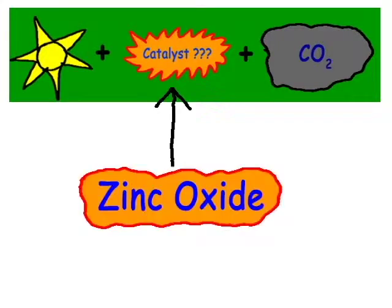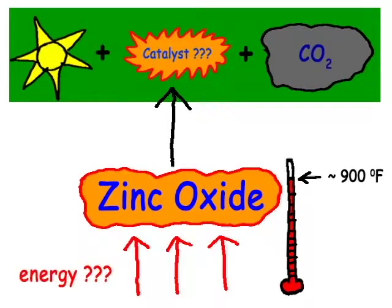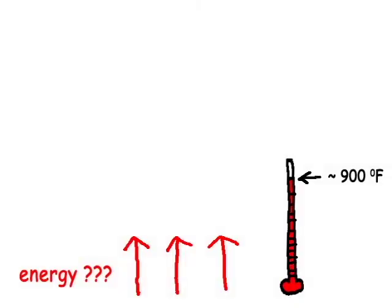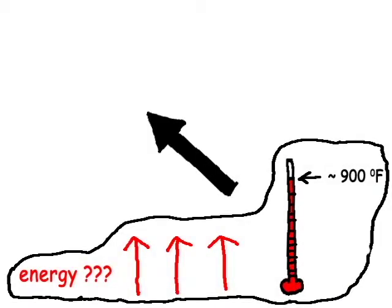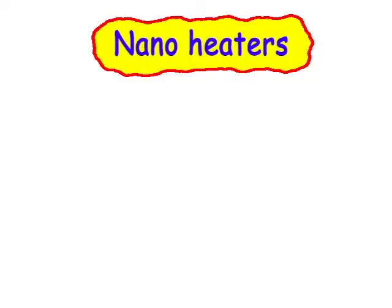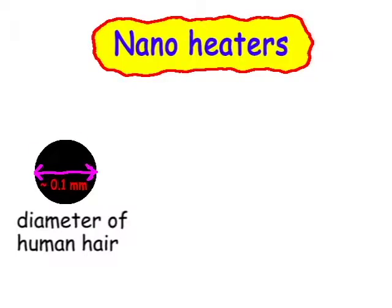Our nano-heater solution will help save some fossil fuel reserves. Zinc oxide is a good catalyst for carbon dioxide conversion at higher temperatures. Therefore, we have to increase the temperature of zinc oxide.